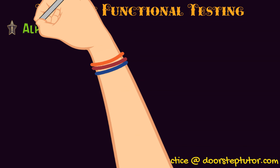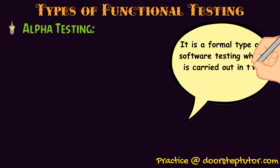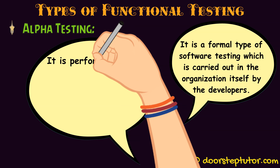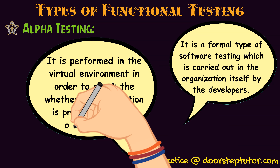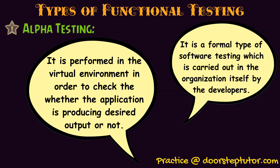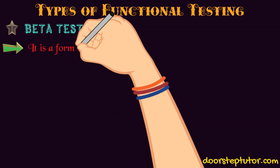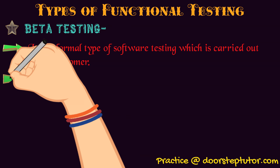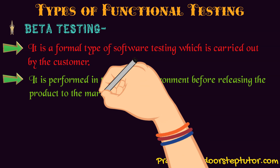Next is alpha testing. Alpha testing means the entire software is tested by the developer team within the organization itself. It is different from beta testing — alpha testing is performed in a virtual environment. If we want the software to be checked in a real-life environment by real users, that is called beta testing.